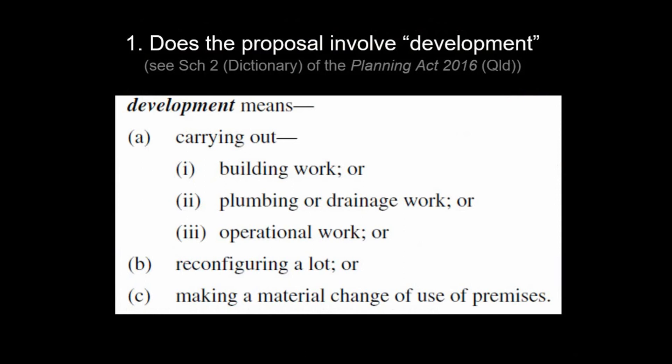Reconfiguring a lot means breaking up, changing the boundaries of, or amalgamating any lot of land. For example, if you had a parcel of land for a house and wanted to merge it with several other parcels — say five houses were bought and someone wanted to turn them into a hotel — they might merge all those parcels together and build a hotel on it. That's an example of reconfiguring a lot.